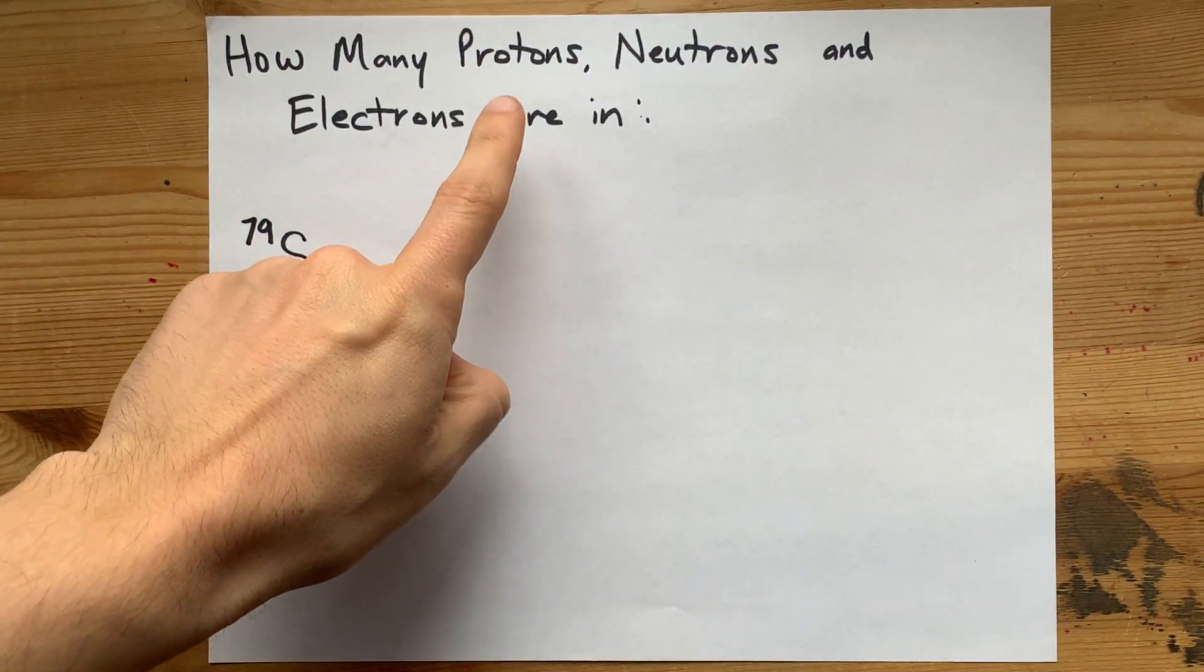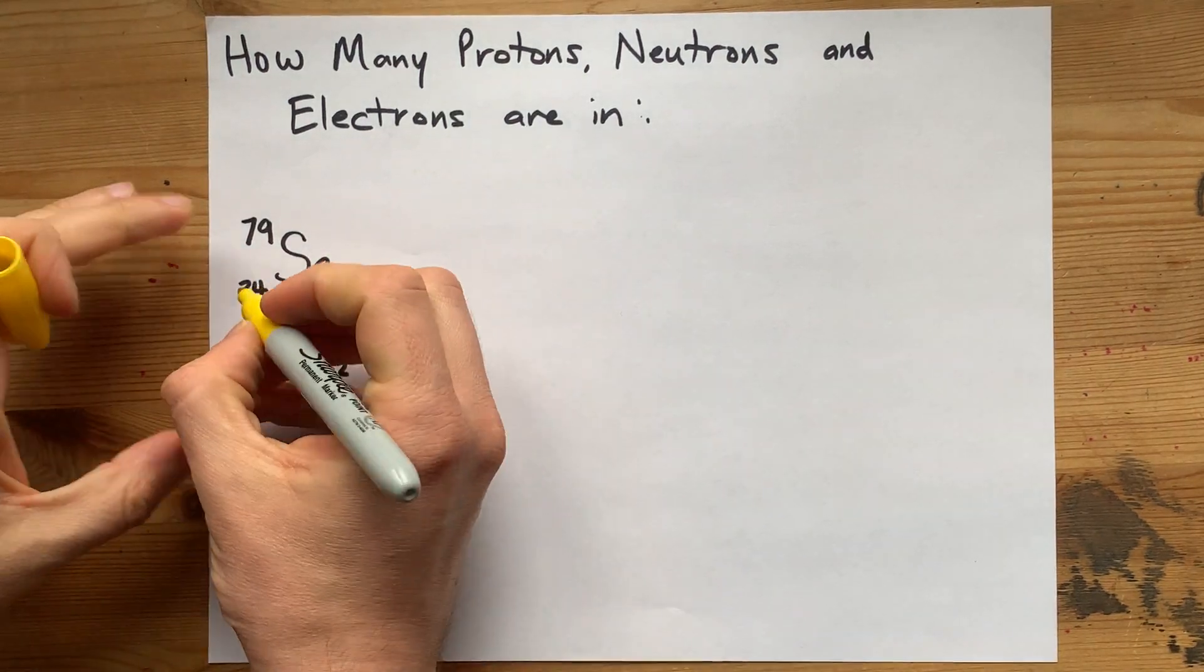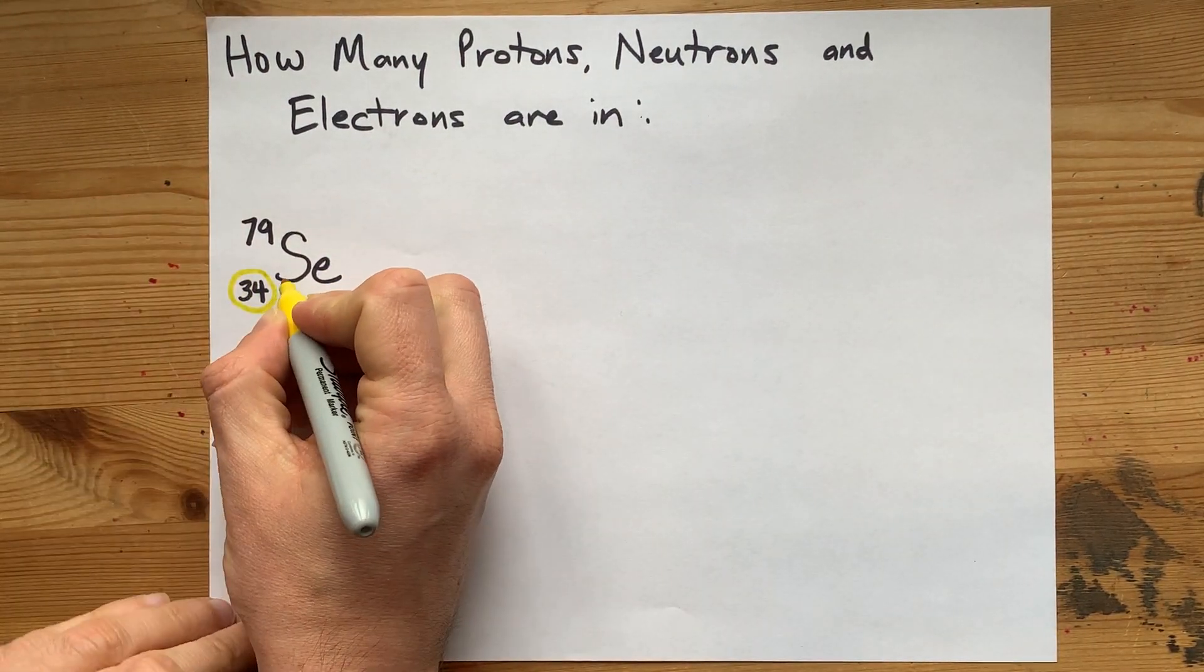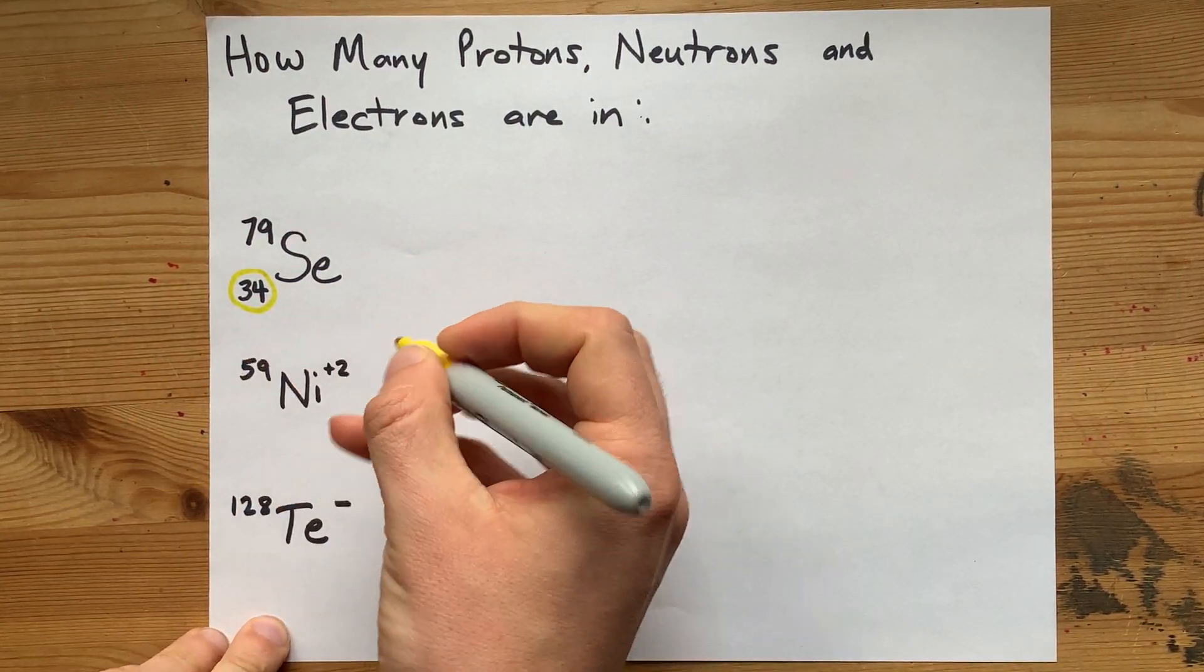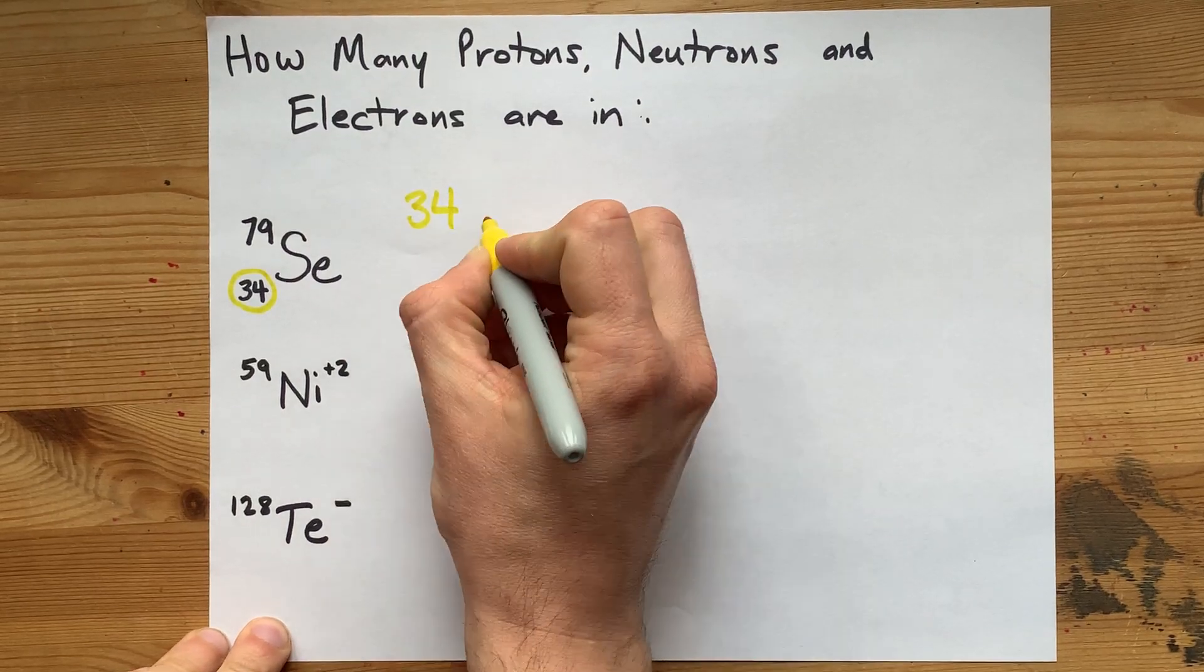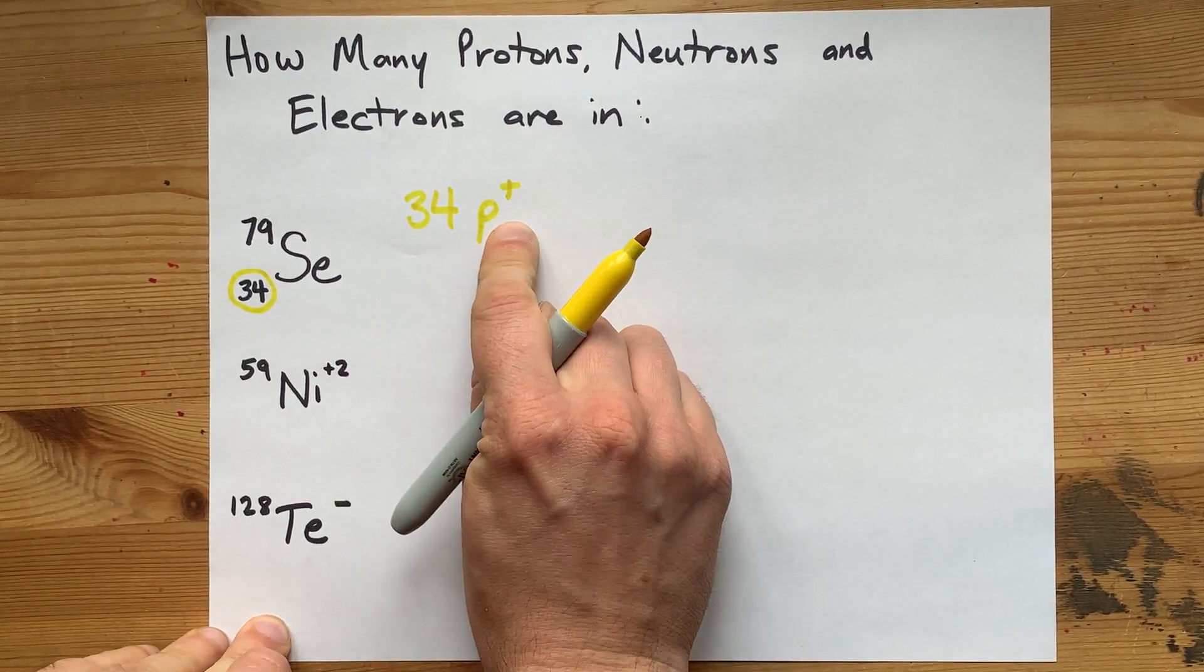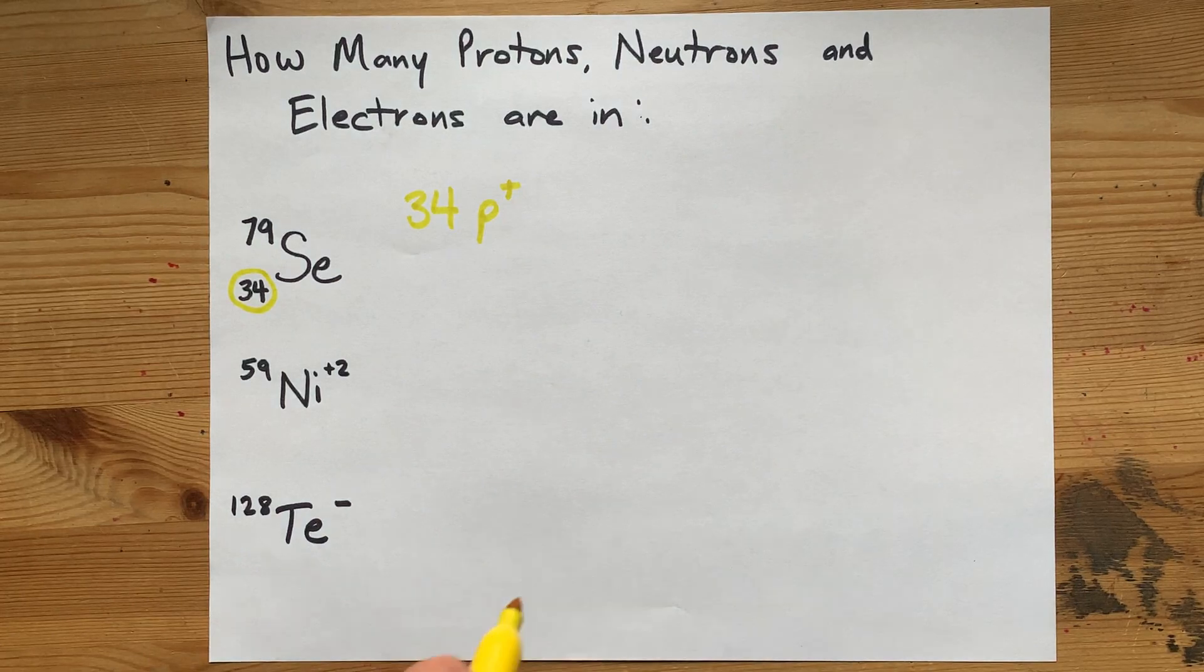There are two places to find the number of protons. If there is a number written in the bottom left-hand corner, that is your number of protons. This is 34. I use P plus for protons, but that's just me.